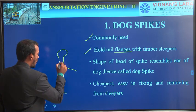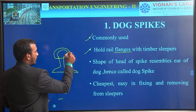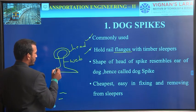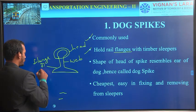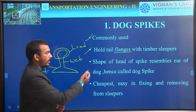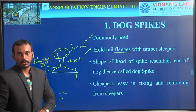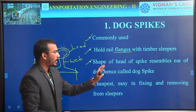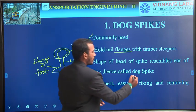Flat-footed rails are generally in this shape. This part is known as the head of the rail, this is known as the web of the rail, and this is known as the flange or foot of the rail. So what we are doing is using the dog spike to hold the flanges with the sleepers. The shape of the head of the spike resembles the ear of a dog. The head of the rail spike seems to be like an ear of the dog — that's why it is known as a dog spike.